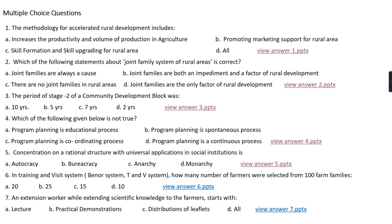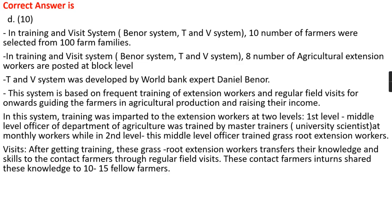Question number six: In the Training and Visit system, also known as the Benor system or T&V system, how many farmers were selected from 100 farm families? Option A, 20; option B, 25; option C, 15; option D, 10. The right answer is option D, that is 10.